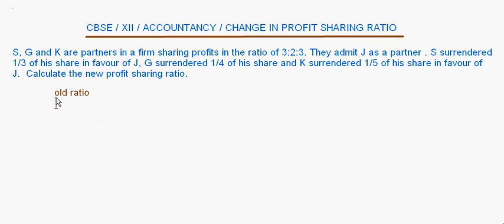First of all, the old ratio of the partners is 3/8 : 2/8 : 3/8. This is the old ratio.